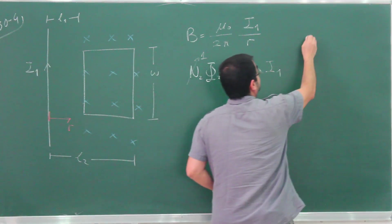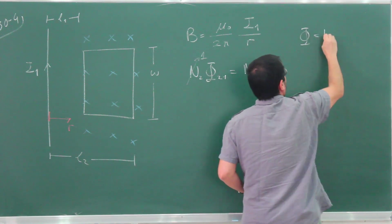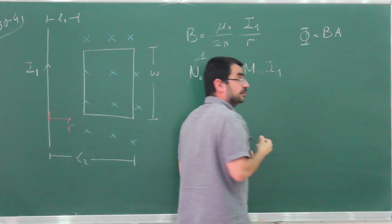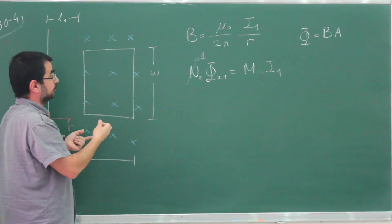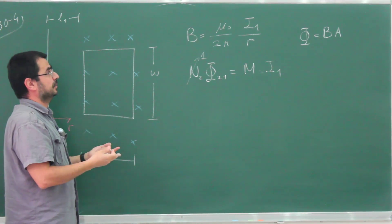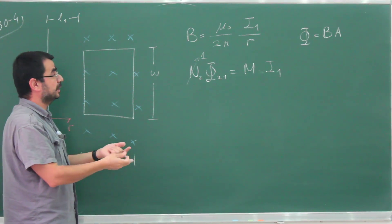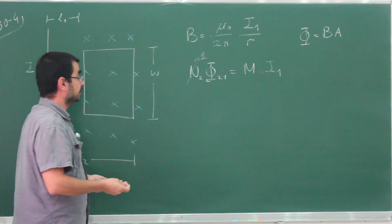The formula for flux with a uniform magnetic field is B times A, but our magnetic field here is not uniform. So what we need to do is divide this into little pieces. Over each piece the magnetic field will be uniform, and then we can add up those infinitesimal pieces, which comes down to an integral.